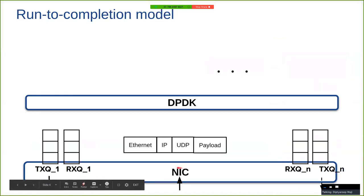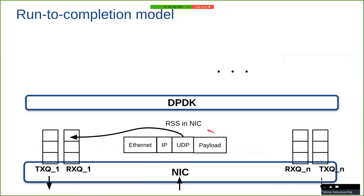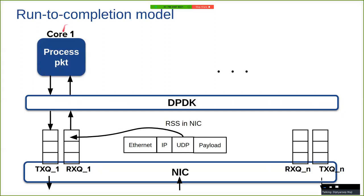Let us go into a bit more detail about the run-to-completion model. Assume the NIC receives a UDP packet. It is sent to any one of the RX queues via RSS on the NIC. As you may recall, RSS or receive-side scaling was discussed in the previous lecture on kernel bypass. When this packet is sent to any one of the RX queues, any one of the cores takes up this packet in the user space, processes the packet — by processing I mean removing or adding any headers, manipulating the data, etc. — and then transmits those packets out via the TX queues.